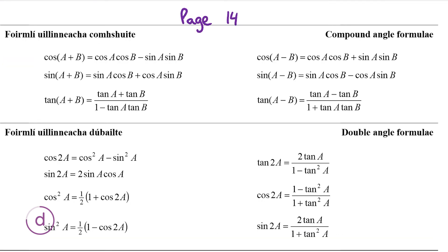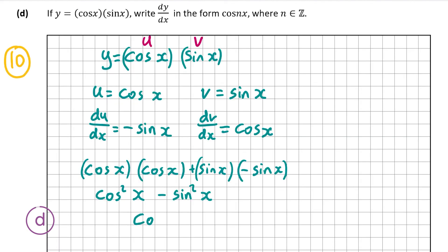Looking at page 14 of the formula tables book, we can write this in the form cos nx. We have cos squared x minus sine squared x, which matches the identity cos squared a minus sine squared a equals cos 2a, so in our case this is cos 2x. Therefore our answer is cos 2x with n equal to 2. That's the answer for part d and the end of the video. Thank you very much for watching and I hope I helped.